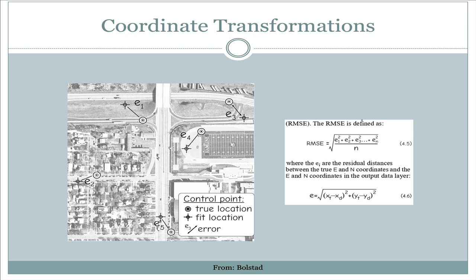The way we calculate RMSE is by measuring the distance between all of the true locations and the fit locations. We take each one of those distances — represented as E1 — and put them into an equation where we square each distance, add them all together, divide by the number of points N, and then take the square root of that number. That tells us, on average, how much distance is between our true locations and our fit locations, based on both the X and Y coordinate values.